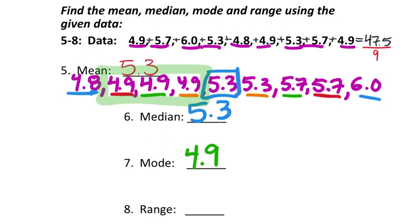Finally, our range. The range is simply taking the largest number, 6.0, and subtracting the smallest value, 4.8. You could use a calculator if you'd like. I get 1.2 when I subtract those. That's a range of 1.2.